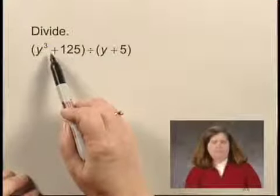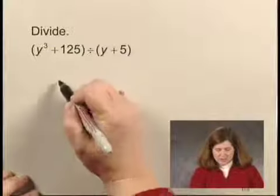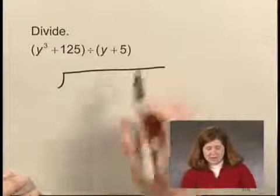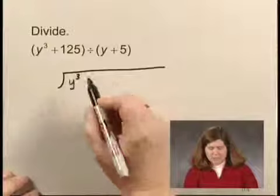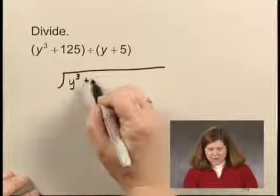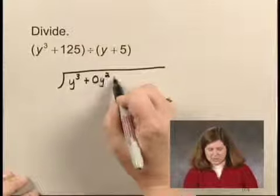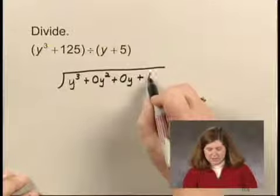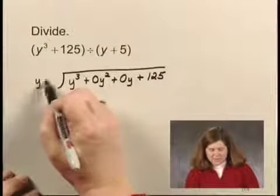We are most likely going to need some space for that, so when I write y cubed plus 125 under the division sign, I'm going to either leave space or actually, and sometimes this is easier to see, write in the y squared term with a zero coefficient, the y term with a zero coefficient, and then the constant term. And I divide this by y plus 5.